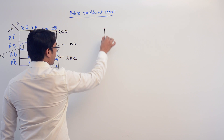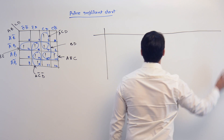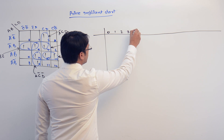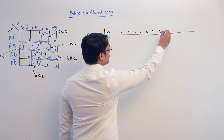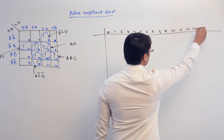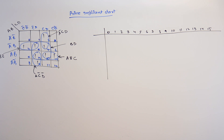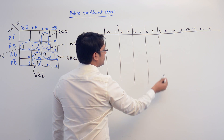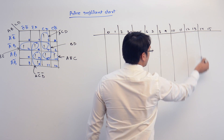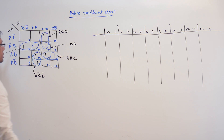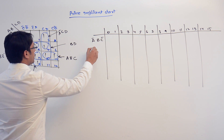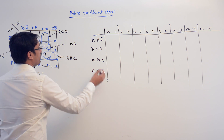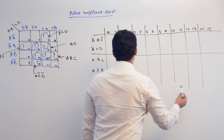Let us try to make a prime implicant chart for this. The terms we have are from 0 to 15. The subcubes which we have are: A complement, B, C complement; A complement, C, D; A, B, C; A, C complement, D complement; and B, D.